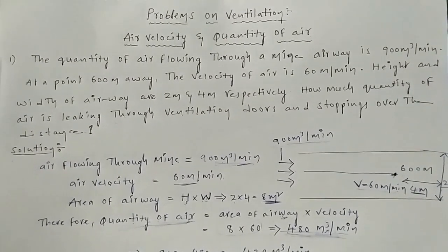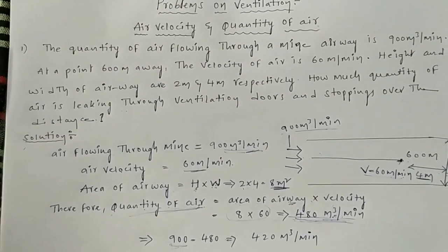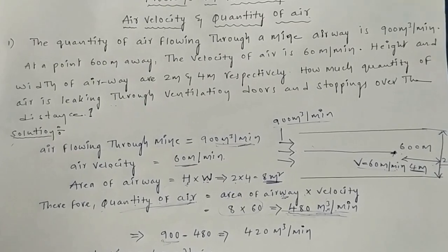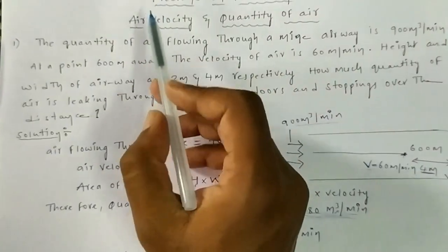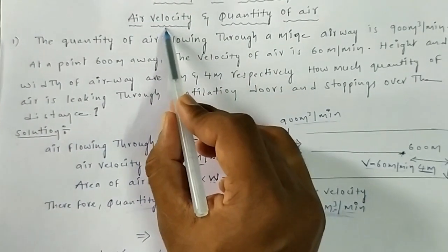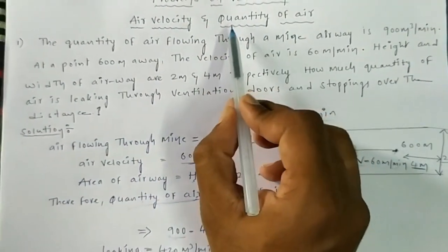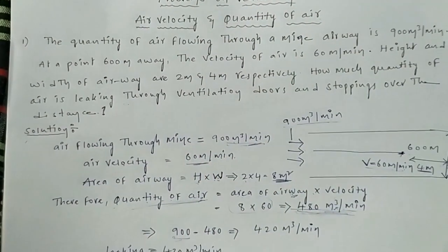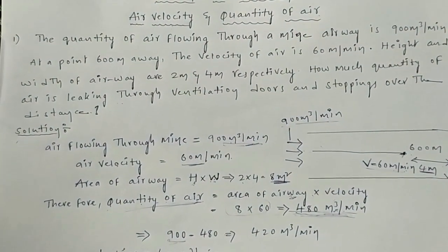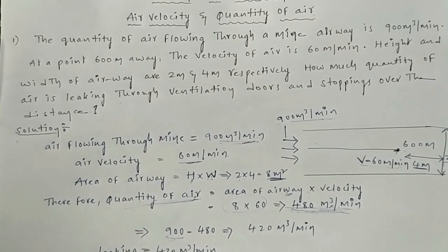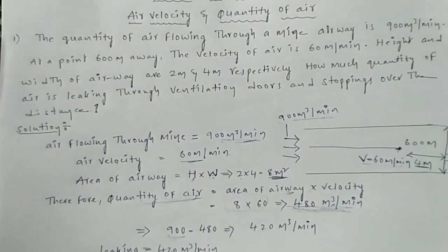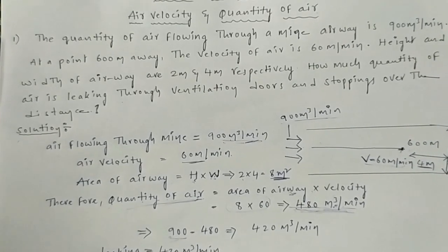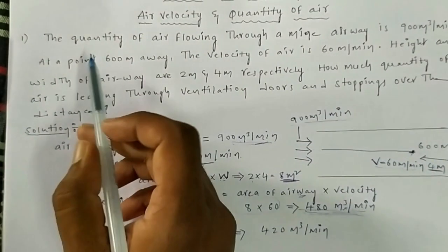Hi friends, this is Tilak Deepa, team members of Mining Ebooks. Today we will discuss problems on ventilation. The topic is air velocity and quantity of air. The quantity of air is the amount of air flowing through a mine in cubic meters per second, called air quantity. Air velocity is the speed at which the quantity of air flows through a mine.